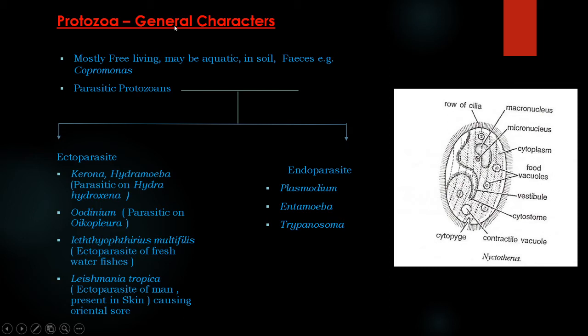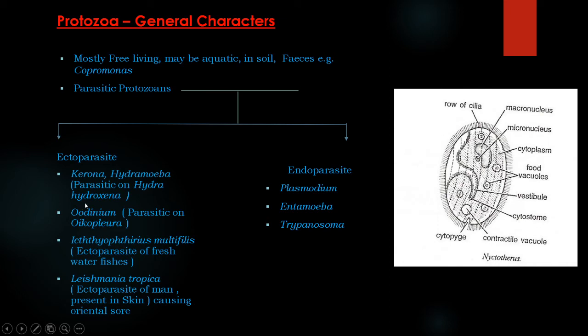Most of the protozoans are free living. Some may be aquatic, that is in freshwater as well as in marine water. Some occur in soil, and a few protozoans are reported in feces — for example, Copromonas. Parasitic protozoans are ectoparasites as well as endoparasites.